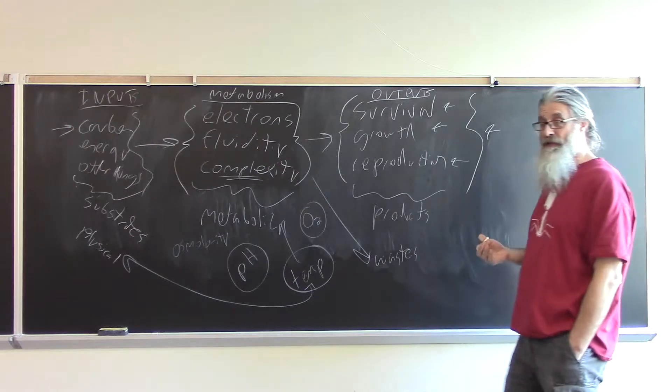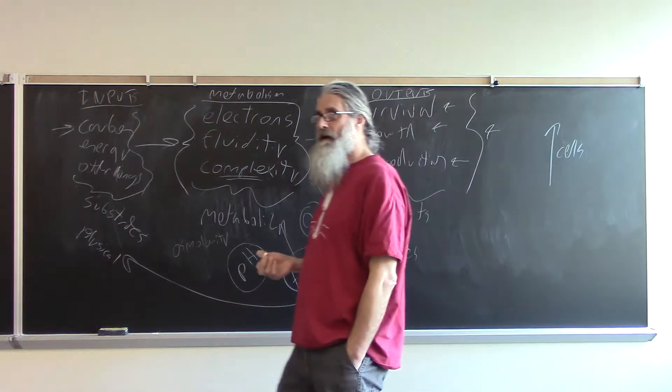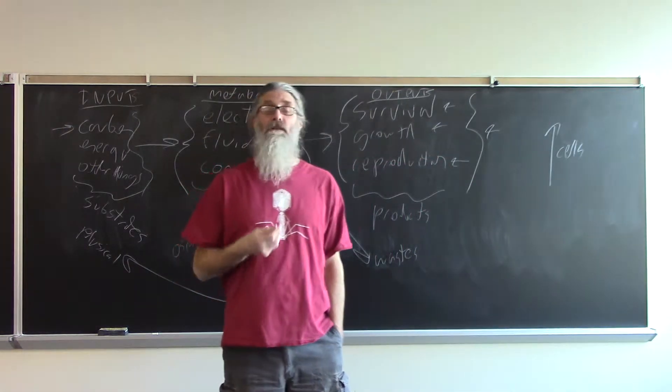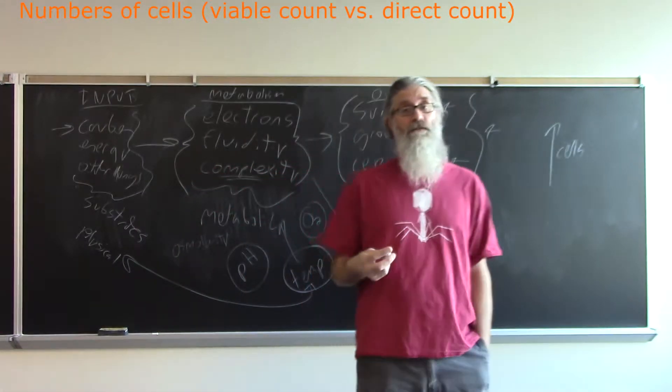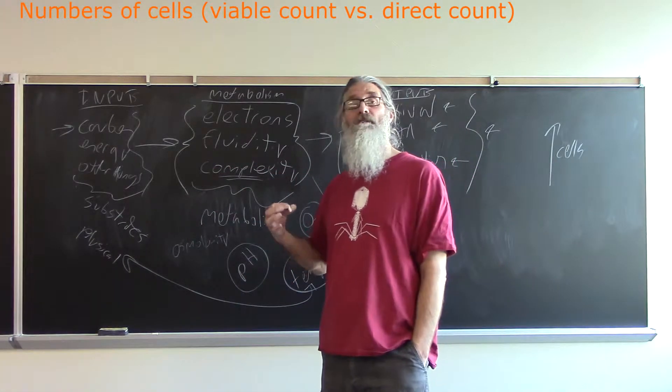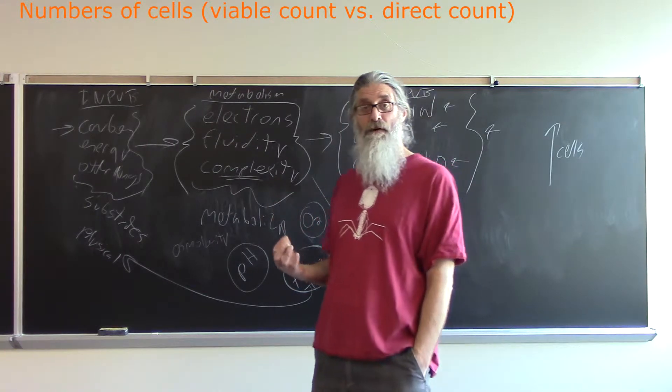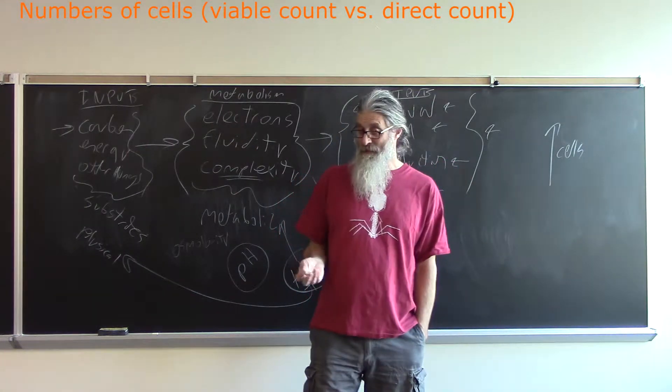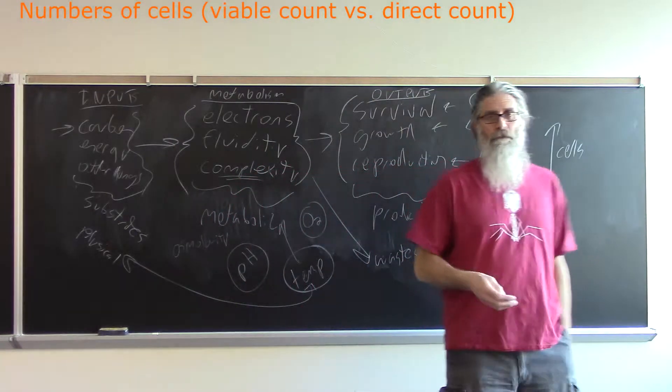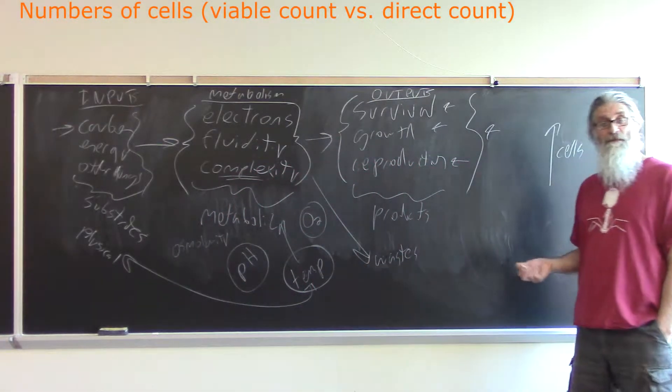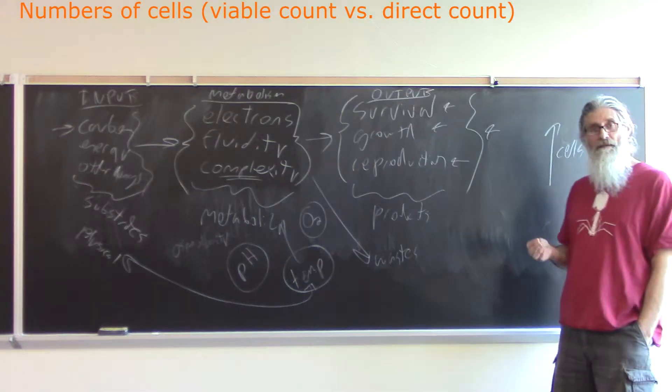when we're talking about cellular organisms like bacteria, we can either measure the number of cells that are able to divide, or simply the number of cells that are present, which we can tell microscopically if we have enough of those cells around. That's the difference between a viable count—the number of living cells—and a direct count.